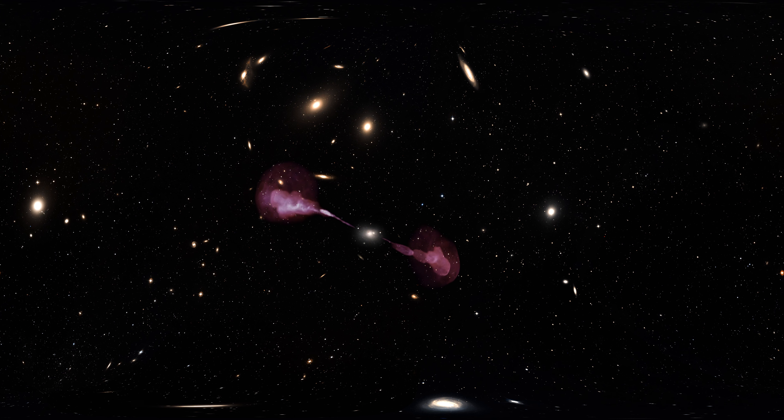Galaxies are organized in clusters and superclusters. These are the largest bound structures in the universe filled with gas at millions of degrees which shines brightly in X-rays and is invisible at all other wavelengths. They grow by feeding from gas distributed in the large scale structure of the universe.